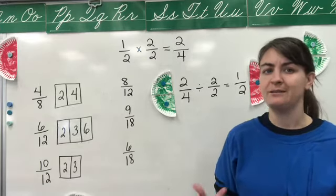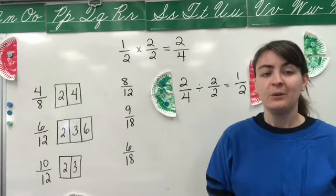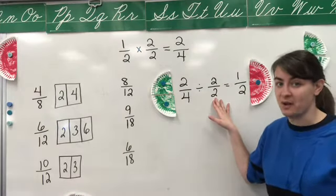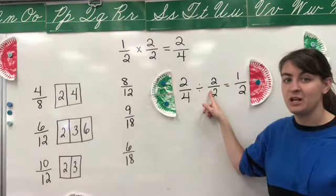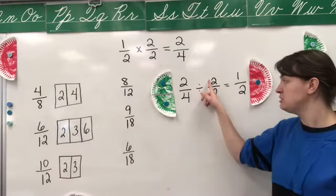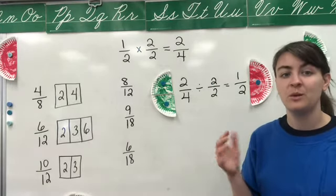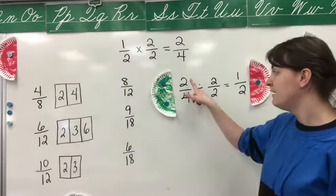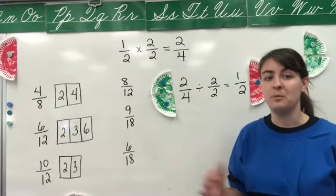So now let's look at exactly how we determine how to reduce a fraction. In order to reduce a fraction, we have to divide by a fraction that's equivalent to one. So we're still working with our equivalent-to-one-whole fractions — that hasn't changed. But what we need to determine now is what fraction we want to go with. Do we want 2/2? Do we want 3/3? Do we want 4/4, or 5/5? We need to decide that.